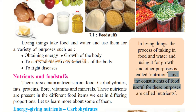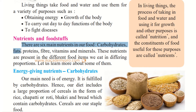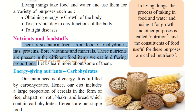Now let's understand each constituent of food in detail. There are six main nutrients in our food: carbohydrates, fats, proteins, fiber, vitamins and minerals. These nutrients are present in different food items in different proportions. In some, carbohydrates may be more; in others, fats may be more; in others, proteins or fibers are more. Therefore, we have to have all kinds of food so that our body is healthy. We will read about the balanced diet later in the chapter.